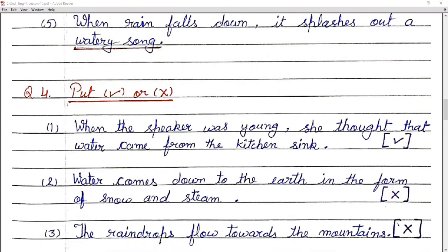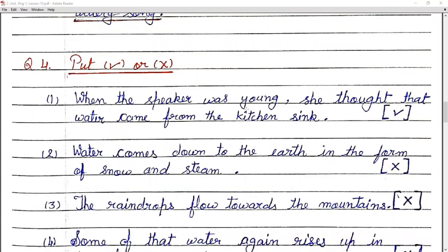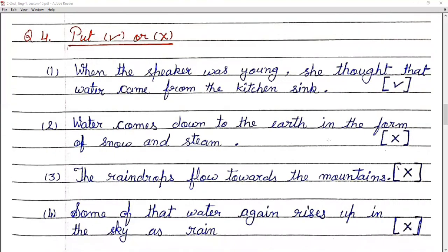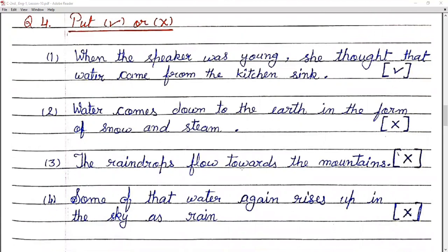Question four: true or false. Number one — when the speaker was young, she thought that water comes from the kitchen sink: True. Number two — water comes down to the earth in the form of snow and steam: False. Number three — the rain drops flow towards the mountains: False. Number four — some of that water again rises up in the sky as rain: False.